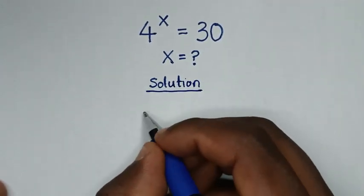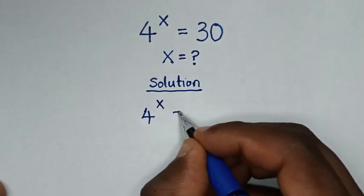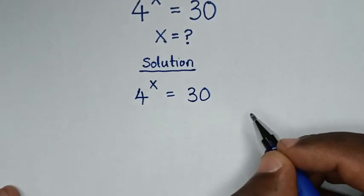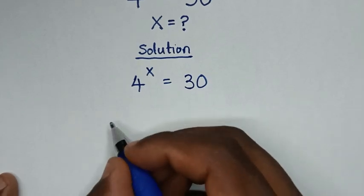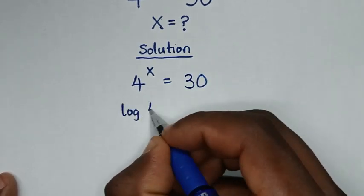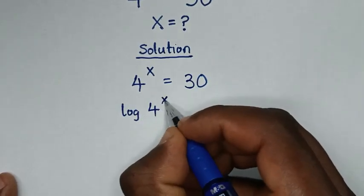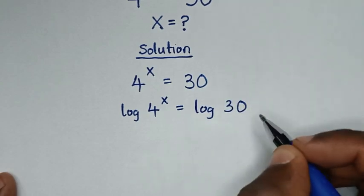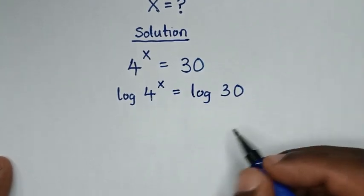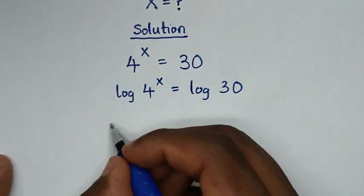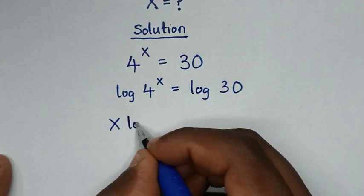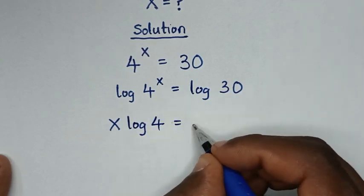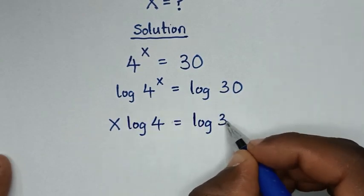From our problem, which is 4 power x is equal to 30, in the first step we'll apply log to both sides. So it will be log of 4 power x is equal to log of 30. Then this power x will move to the front, so it will be x times log of 4 is equal to log of 30.